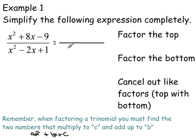We have to factor the top by finding the two numbers that multiply to C, which is the negative 9, and add up to B. So I'm going to write my two sets of parentheses, x and x. Now, what two numbers multiply to negative 9 but also add up to 8?